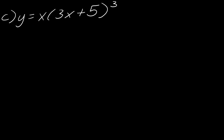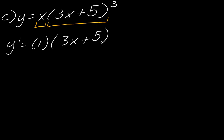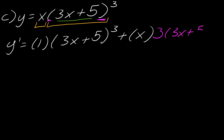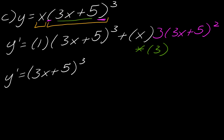Now for this last one. Once again we're going to use the product rule and the chain rule. My two functions are x and (3x + 5) cubed. First I take the derivative of x, which is 1, and leave the second function alone. Then I leave x alone and take the derivative of (3x + 5) cubed using the chain rule. The outermost function is the cube, the innermost is 3x + 5. This gives 3 times (3x + 5) squared, multiplied by the derivative of the inside which is 3, so 9x times (3x + 5) squared.